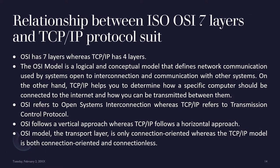Let us see the relationship between OSI's 7 layers and the TCP/IP protocol suite. OSI has 7 layers whereas TCP/IP has 4 layers. OSI refers to Open System Interconnection whereas TCP refers to Transmission Control Protocol. OSI follows a vertical approach whereas TCP/IP follows a horizontal approach.